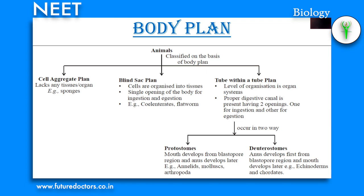Animal body is classified on the basis of body plan into three types: cell aggregate plan, blind sac plan, and tube within a tube plan. Cell aggregate plan means they lack any tissues or organs — example: sponges. Blind sac plan means cells are arranged into tissues with a single opening of the body for both ingestion and ejection — example: cnidarians and flatworms. Tube within a tube plan has organ system level of organization with a proper digestive canal having two openings.